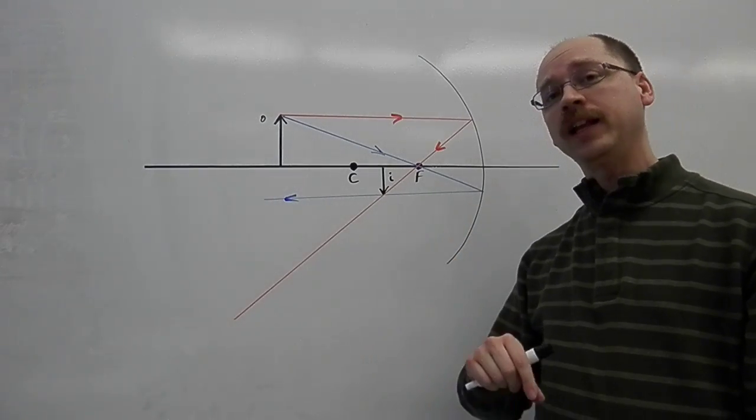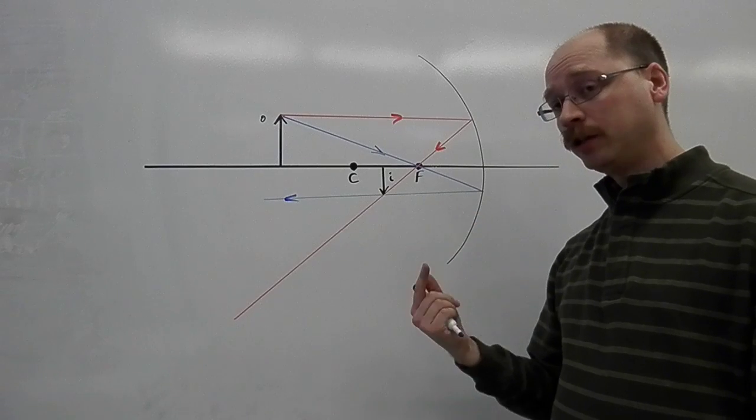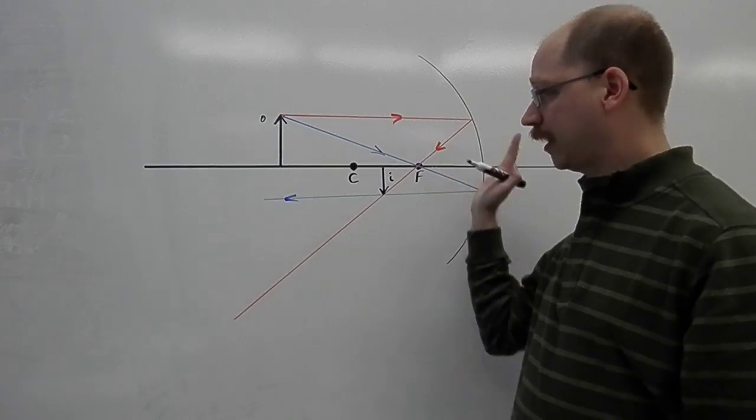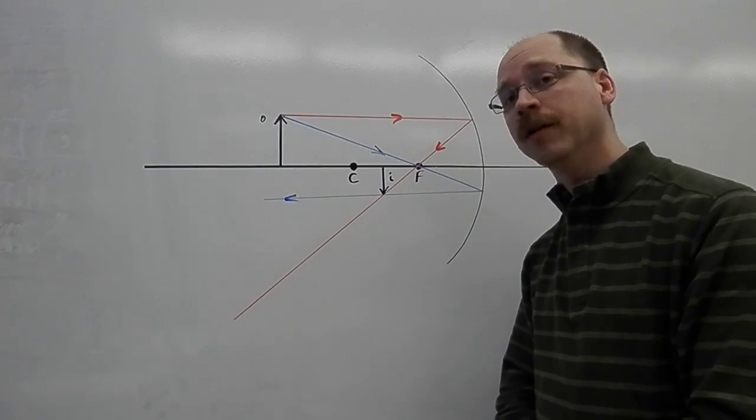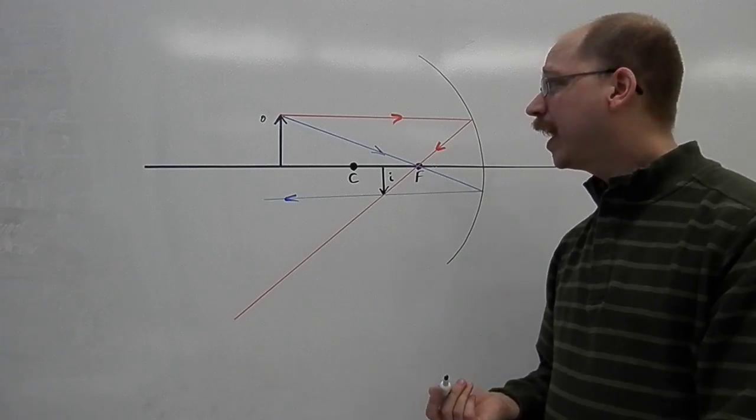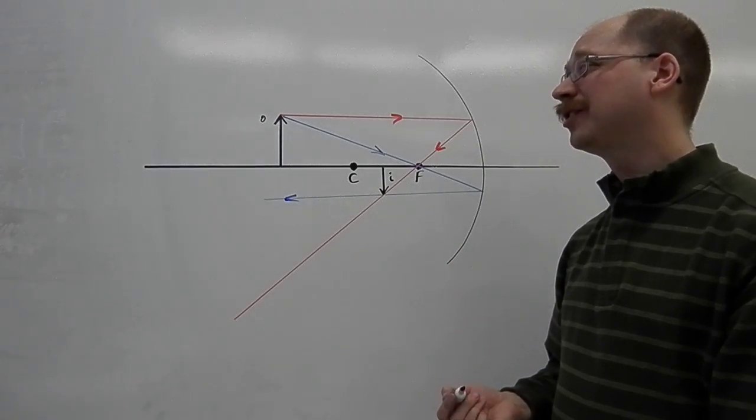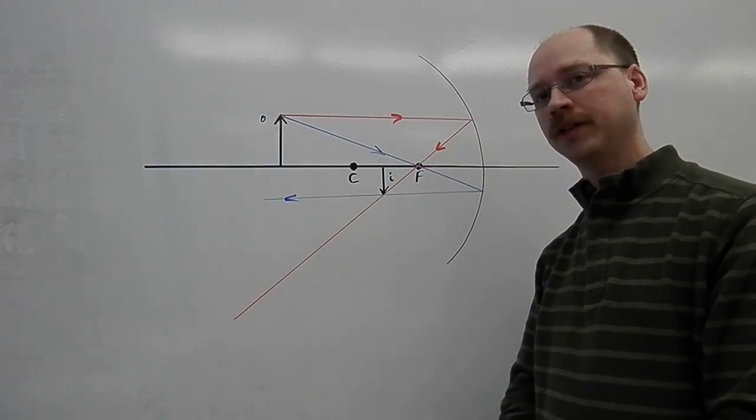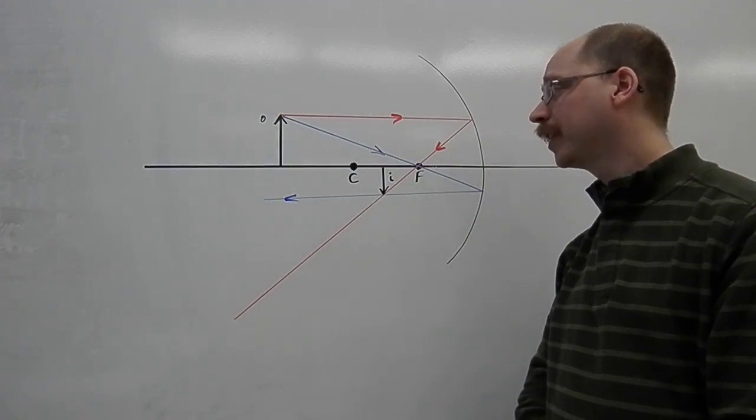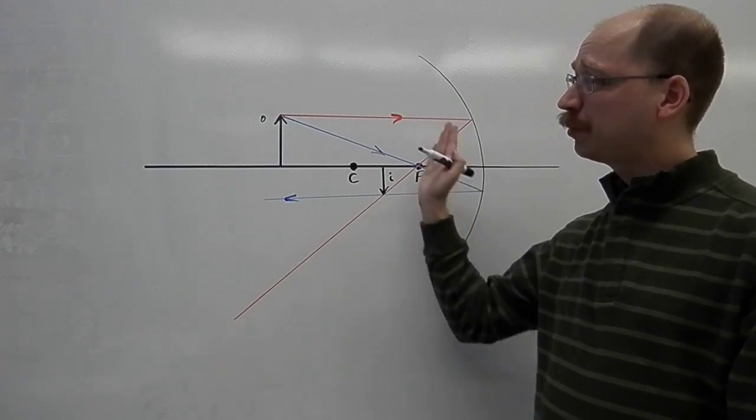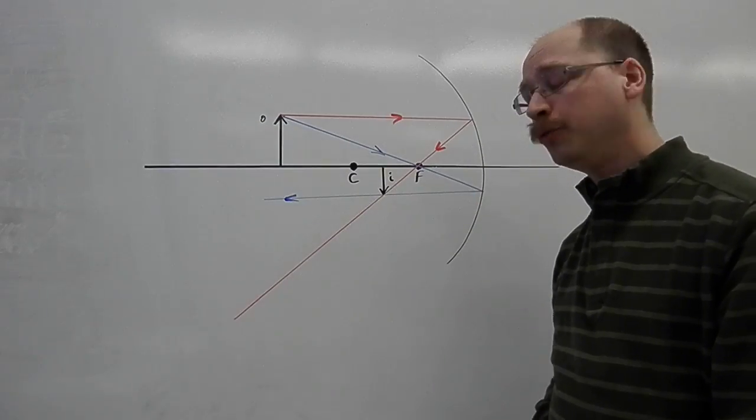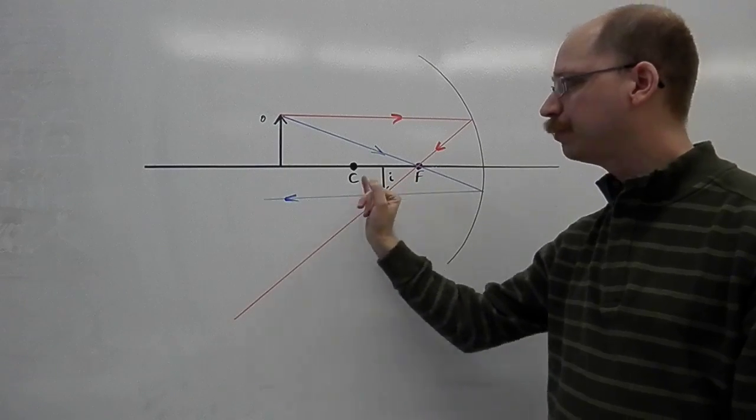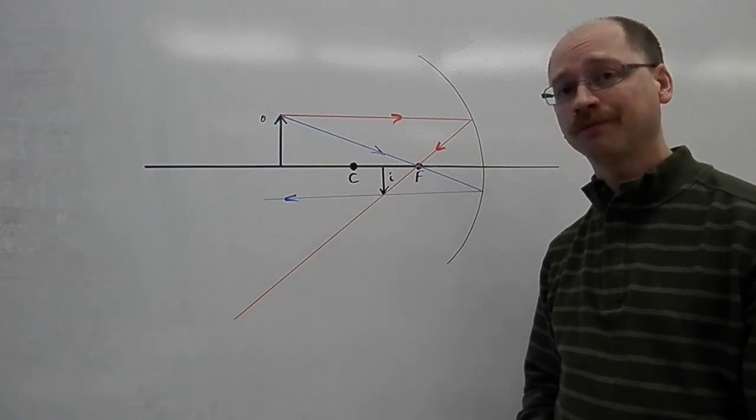In this case, I have an image that is real, because it's still on the real side of the mirror. It is inverted, and it's not too hard to see that compared to the object, this has been diminished. So, it's smaller than the original. So, apparently, when an object is placed beyond the center, you produce an image that appears between the center and the focus.